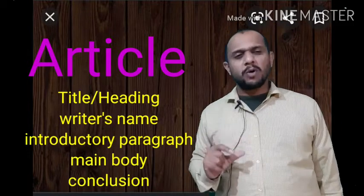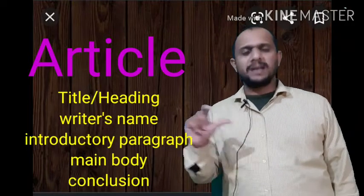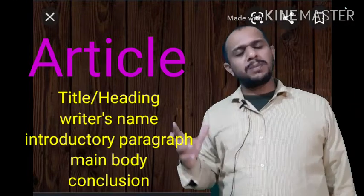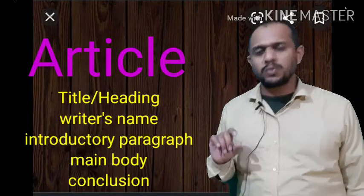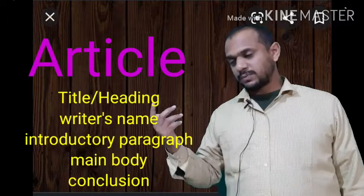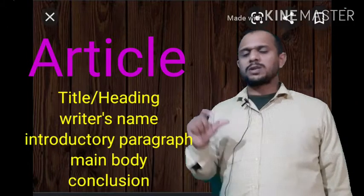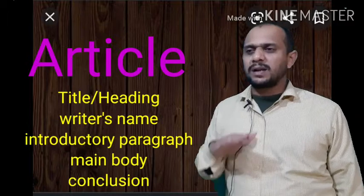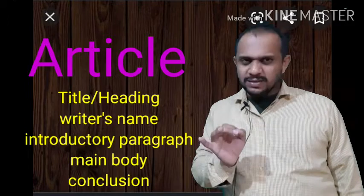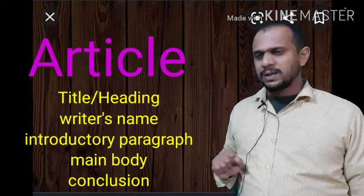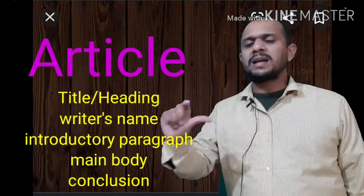When you write an article, remember some important points. First, keep the article in a box. On the top of the box, write the title — the heading. The title can be in rhyming form or as a slogan to make it impressive. Then below the title and heading, write the byline. Byline means who is writing the article — the writer's name.